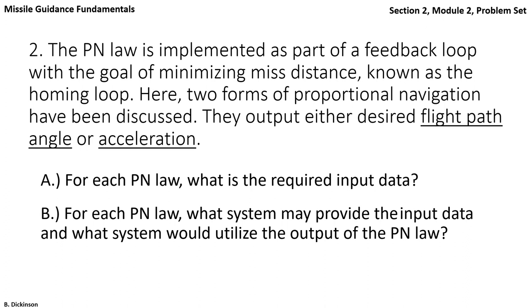So the pronav law is implemented as part of a feedback loop called the homing loop. The goal of the homing loop is to get very close or directly hit the target. We've discussed two forms of pronav, a flight path angle form and an acceleration form. They both achieve the same result.